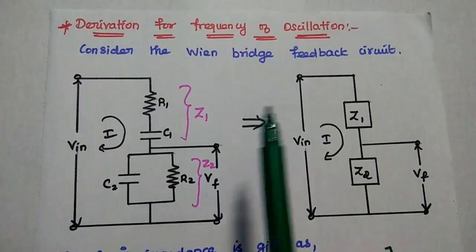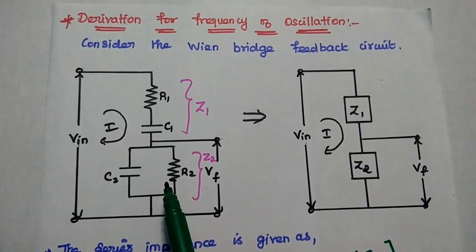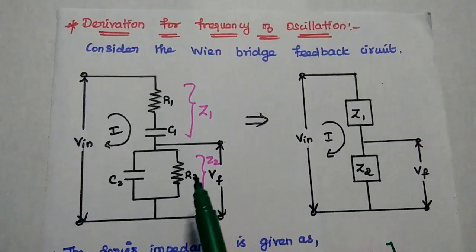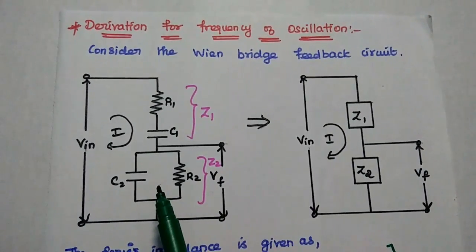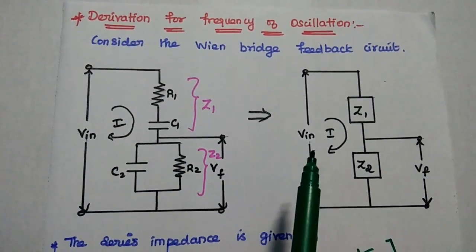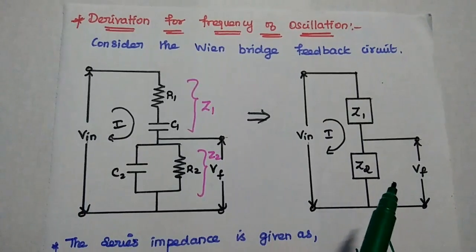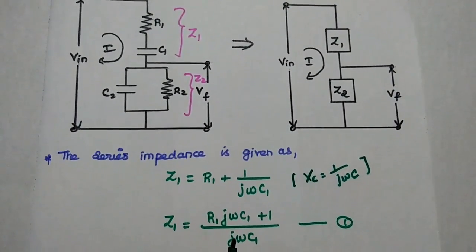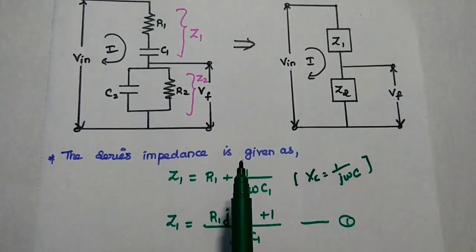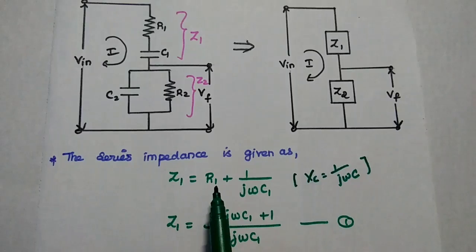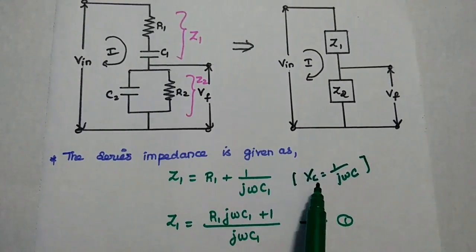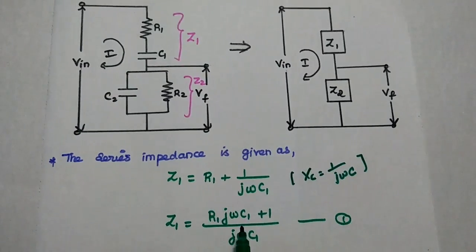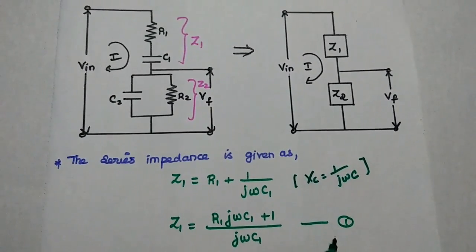We are going to derive the frequency of oscillation by considering the Wainbridge feedback circuit, which consists of a series arm and a parallel arm. Here Z1 represents the series combination of R1 and C1, and Z2 represents the parallel combination of R2 and C2. We can give the input to the Wainbridge circuit across Z1 and Z2, and take the feedback signal across Z2. Next, we find the series impedance: Z1 is equal to the series combination of R1 and C1, where the reactance value is 1/(jωC1). So Z1 = R1 + 1/(jωC1), which simplifies to (1 + jωR1C1)/(jωC1). Consider this as the first equation.